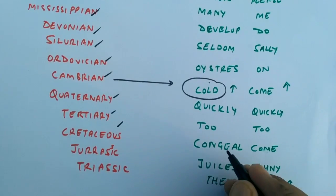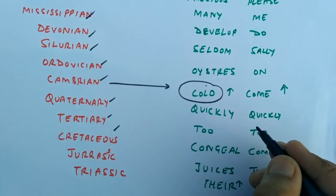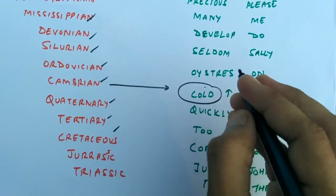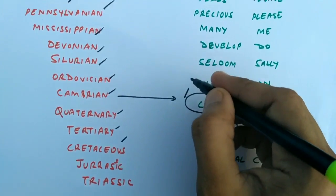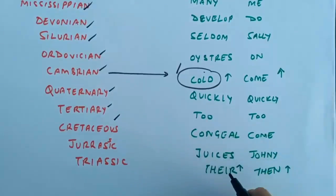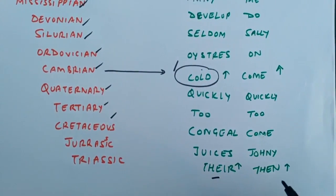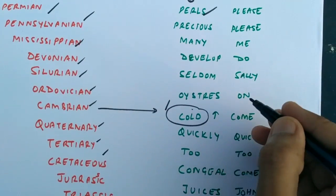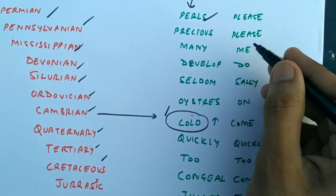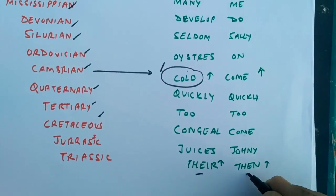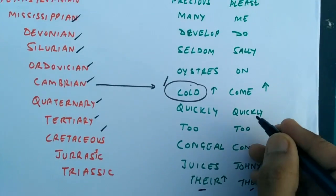Their juices congealed too quickly. I hope it is clear to you. Start from the cold up to the pearl, then join from there: Also come on, Sally, on me please, please, then Johnny come too quickly.